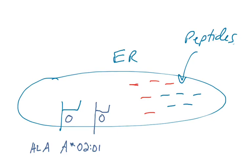You're going to find both self peptides, shown in blue, and pathogenic peptides, shown in red. So let's say the cell is infected by a virus. We've got some viral peptides in here, some self peptides in here, and the HLA-A0201 allotype.